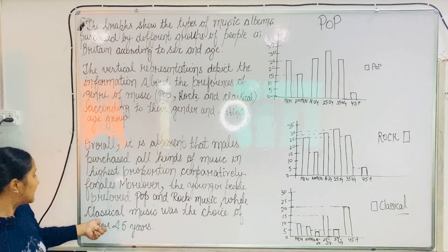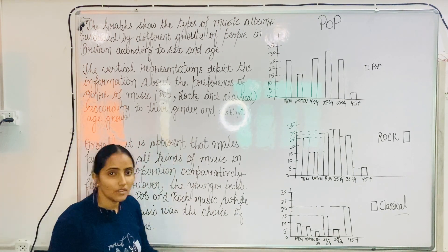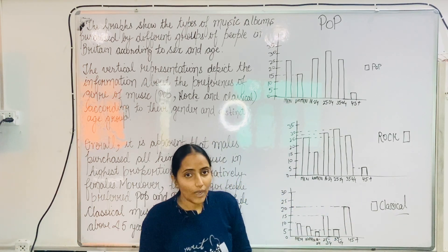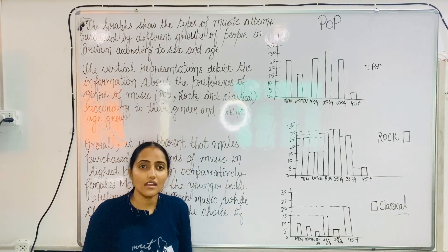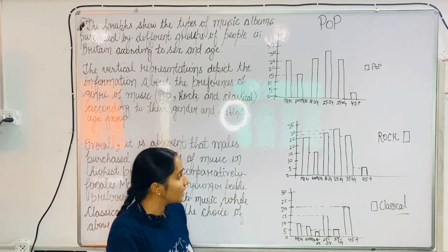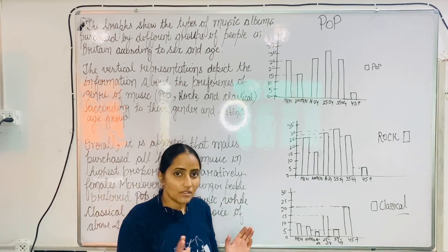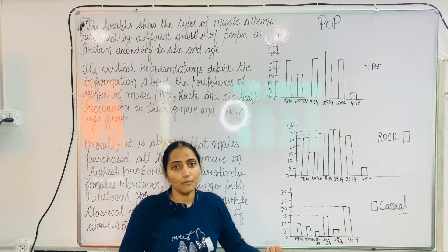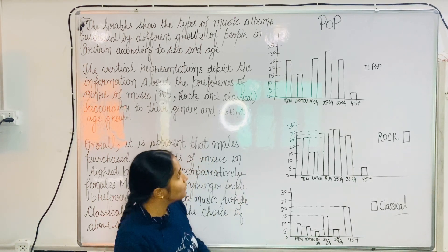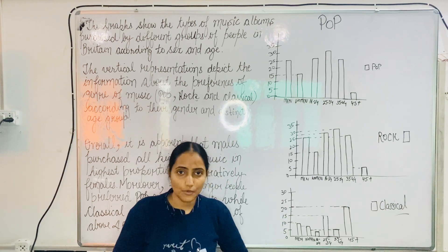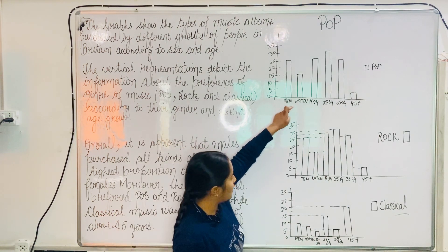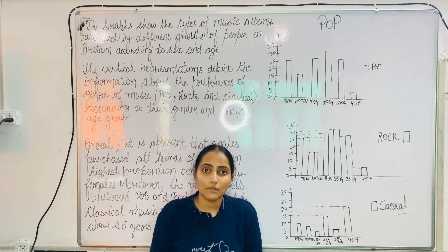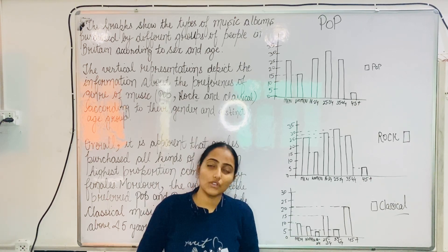However, classical music was the choice of those above 45 years. Classical music was preferred by the age group above 45. So these are the overall points — we need to cover both gender and age group in the overall. Now let us move towards the body paragraphs: the first body paragraph will cover music preferences according to gender, and the second body paragraph will cover music preferences according to different age groups.